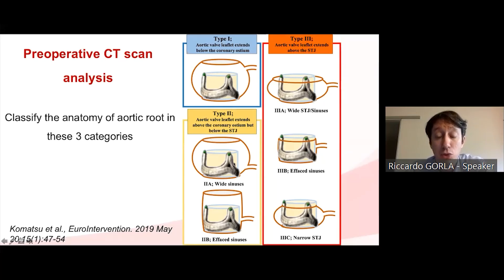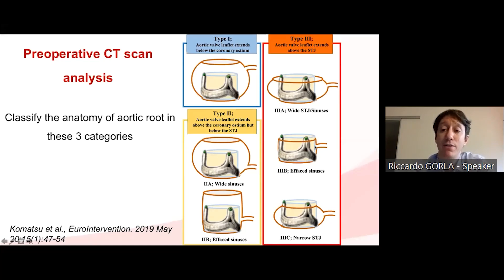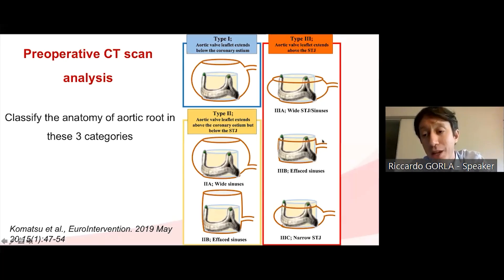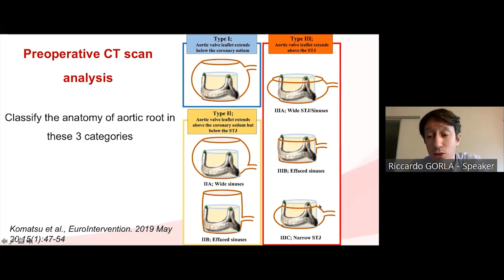In type two, where you have low coronary arteries, you must consider the distance between the coronary ostia and the prosthetic valve. If the sinus is very short — as in panel 2B — there can still be a risk of coronary obstruction. In type three, where the aortic leaflets extend above the sinotubular junction, you must calculate both the distance between the coronary ostia and the prosthesis and the distance between the sinotubular junction and the prosthesis. A small sinotubular junction can lead to sinus jailing and coronary occlusion.